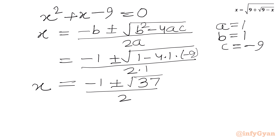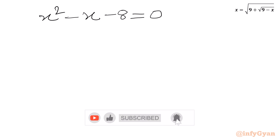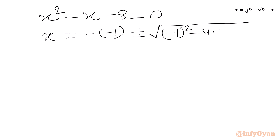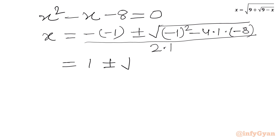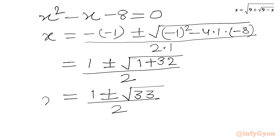For the second quadratic equation, x squared minus x minus 8 equals 0, we apply the quadratic formula again. Here a equals 1, b equals negative 1, c equals negative 8. So x equals 1 plus or minus square root of 1 plus 32, all over 2, which gives x equals 1 plus or minus square root of 33, over 2.